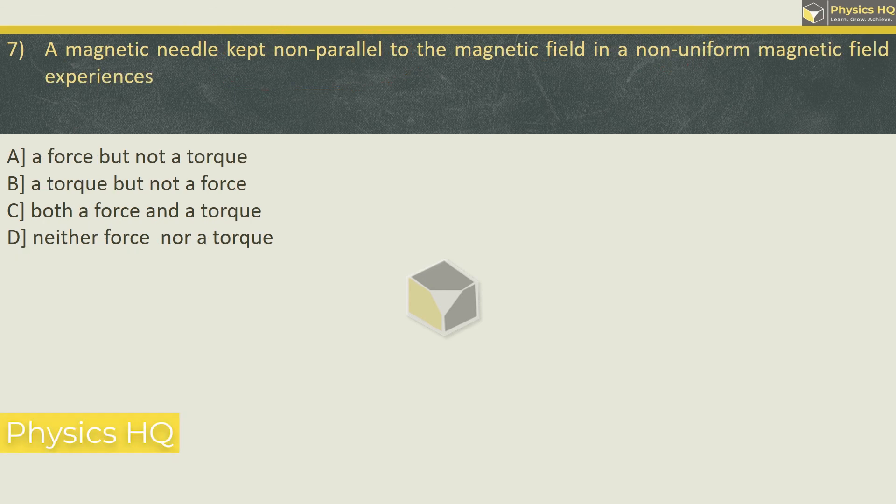Next MCQ: a magnetic needle kept non-parallel to the magnetic field in a non-uniform magnetic field experiences a force but not a torque, a torque but not a force, both force and torque, or neither force nor torque. First of all, because it is not parallel to the magnetic field, it will experience a torque. And the second case is, because the field is non-uniform.